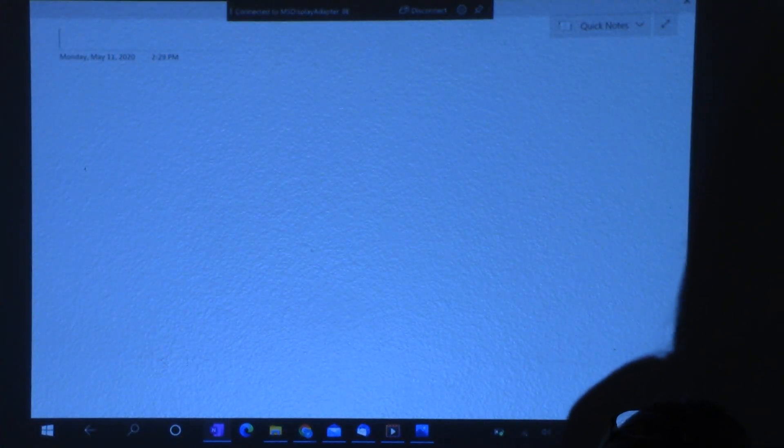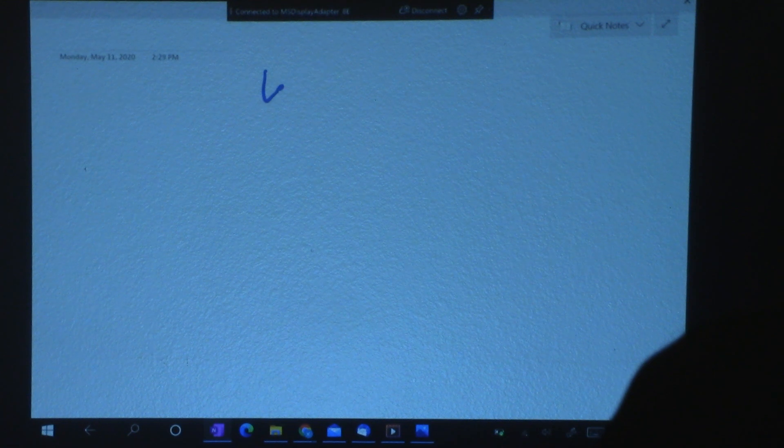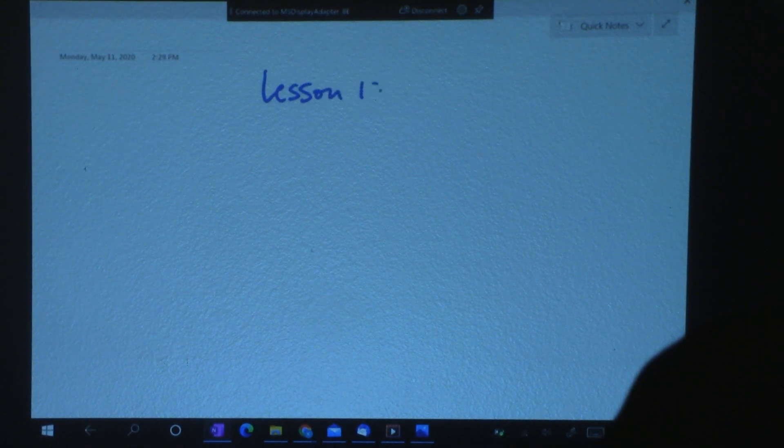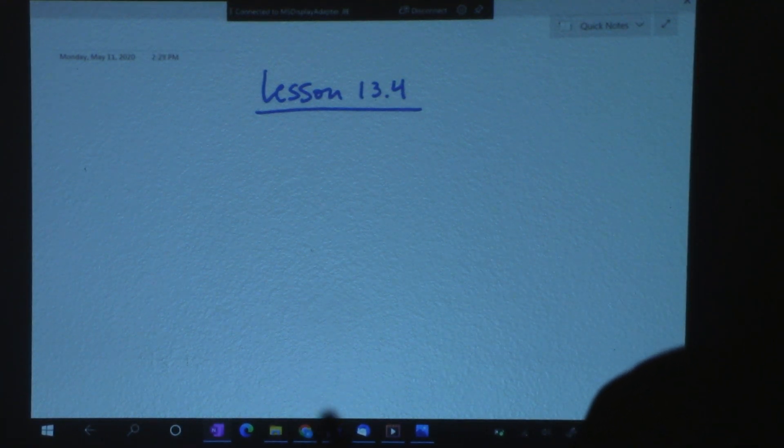So here is the overhead. And this is lesson 13.4. And in the book, they don't call it this, but we're going to call it FOIL.